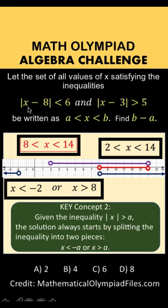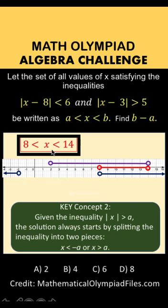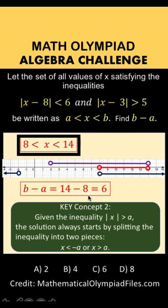Therefore, the solution set of |x - 8| < 6 and |x - 3| > 5 is 8 < x < 14. This is now in the form a < x < b where a = 8 and b = 14. To find b - a, we simply subtract: 14 - 8 = 6. Our final answer is letter C, 6.